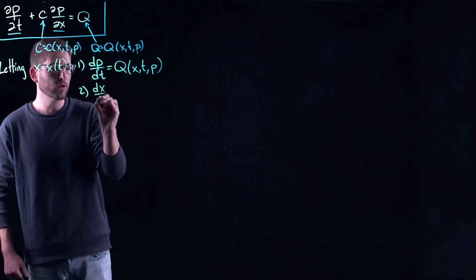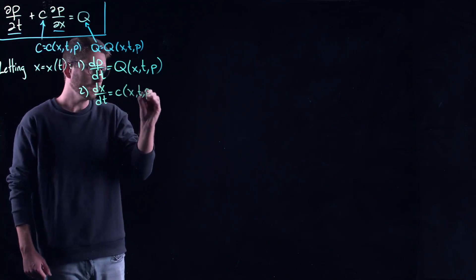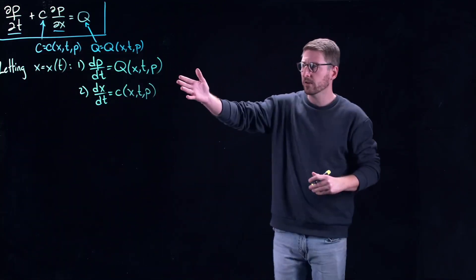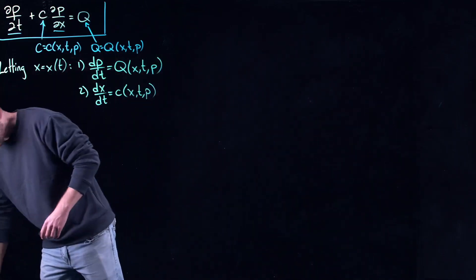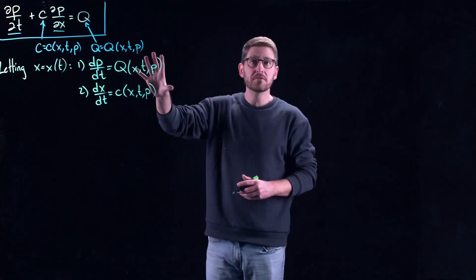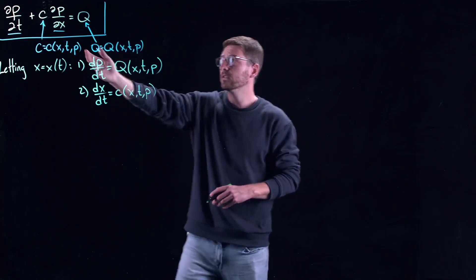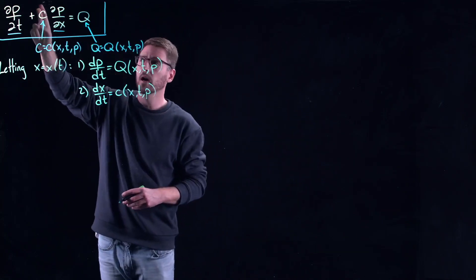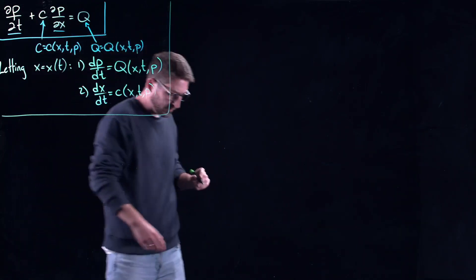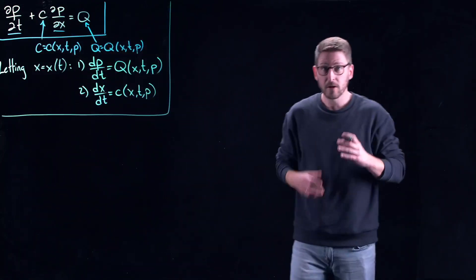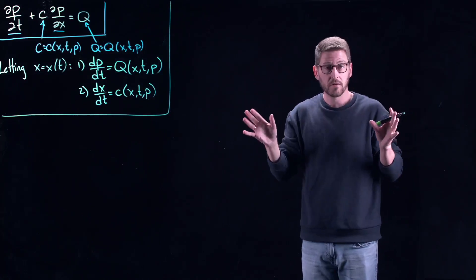And then we also have the equation for the characteristics which was given by this c term. So you can imagine this gets very very complicated very quickly if you have very complicated c and q functions. The application you've seen so far of quasi-linear partial differential equations is coming from the wave equation where c was constant, q is equal to zero. So what I would like to do in this video is derive a quasi-linear partial differential equation completely absent of the wave equation.